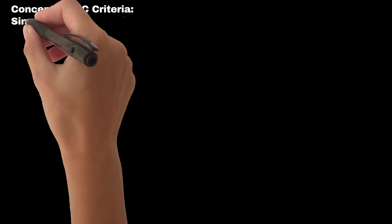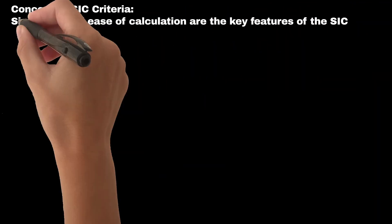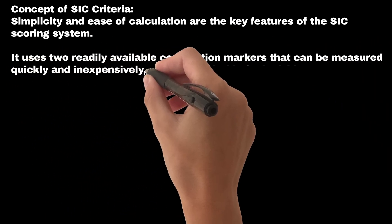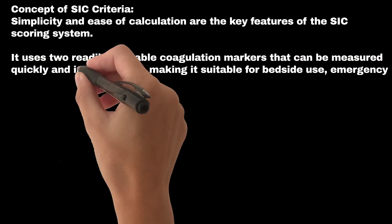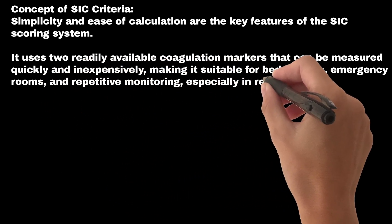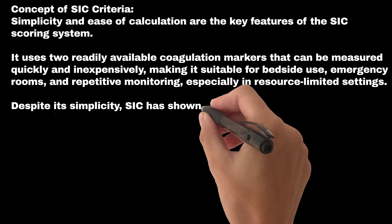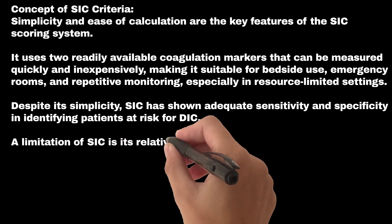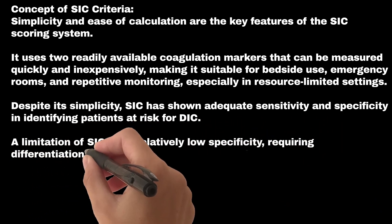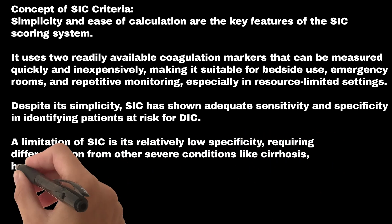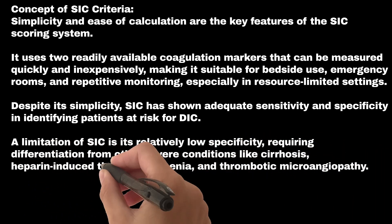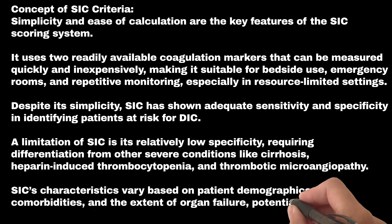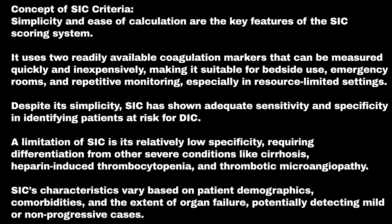Simplicity and ease of calculation are the key features of the SIC scoring system. It uses two readily available coagulation markers that can be measured quickly and inexpensively, making it suitable for bedside use, emergency rooms, and repetitive monitoring, especially in resource-limited settings. Despite its simplicity, SIC has shown adequate sensitivity and specificity in identifying patients at risk for DIC. A limitation is its relatively low specificity, requiring differentiation from other severe conditions like cirrhosis, heparin-induced thrombocytopenia, and thrombotic microangiopathy. SIC characteristics also vary based on patient demographics, comorbidities, and the extent of organ failure.